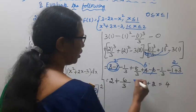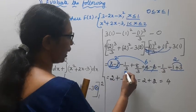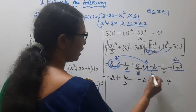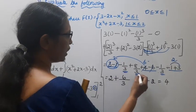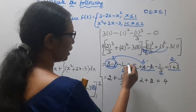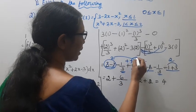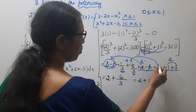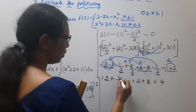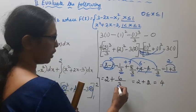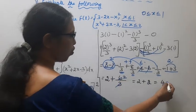Simplifying: minus 1/3 from the first part, plus the second part gives 8/3 plus 4 minus 6, minus 1/3 minus 1 plus 3. Combining: this simplifies to give 4 as the final answer.